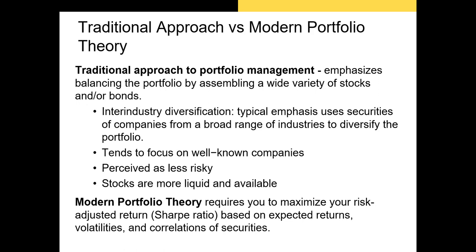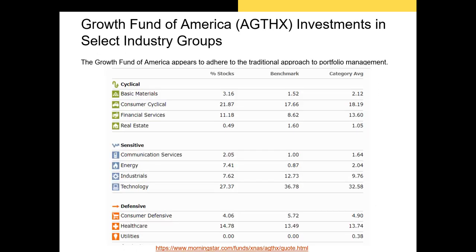Let's look at a portfolio in the real world constructed using a more traditional approach. The Growth Fund of America is a mutual fund that holds securities across 10 of the 11 sectors of the US economy. The fund's management chooses to underweight and overweight various sectors based on security analysis. Notice that the fund has not invested any funds in the utility sector — likely because the fund manager believes those assets are overvalued, while assets in the consumer cyclical sector are undervalued.